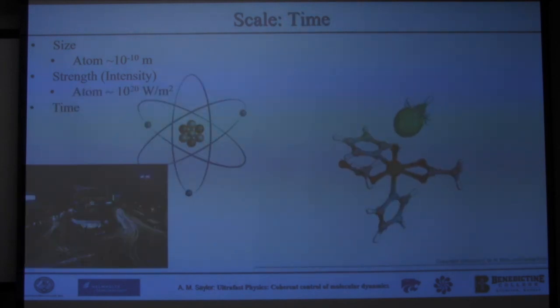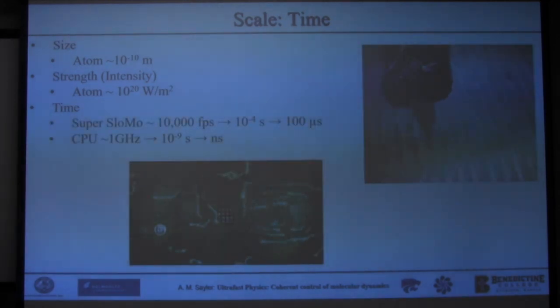So now we have the size and the strength. What's the time scale we need? Remember we want to make this movie on the right and we don't just want it to be streaky like the car headlights. So what time scale do we need to see the nuclear motion and the electronic motion? Again, just for example, the right hand side is a record player. It's kind of an outdated example, unfortunately. But this is the slow motion of a record player needle. This is around 100 microseconds. This is 10,000 frames per second. And if you're looking for a new phone or a new computer, they'll often list the speed in gigahertz. This is how many operations. This is 10 to the ninth operations per second. This means each operation happens in about a nanosecond. So this is how fast your computer is going.